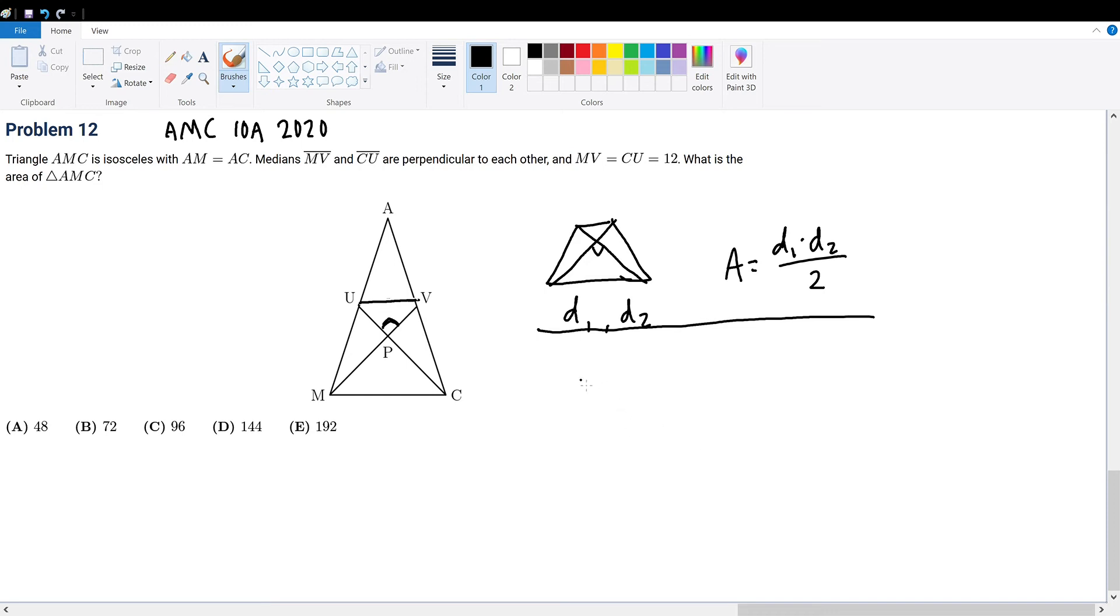Since U and V are medians, that means UV is parallel to MC and UV is half of MC. Therefore, if the side length ratio is 1 to 2, that means their area ratio will be 1 to 4.